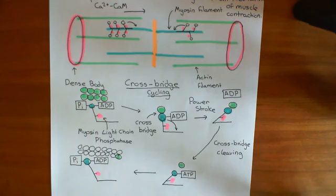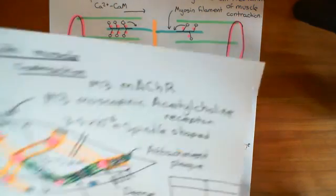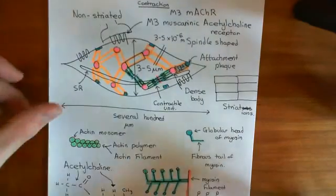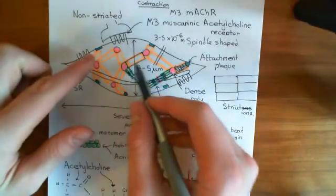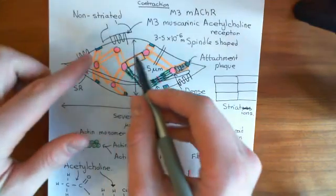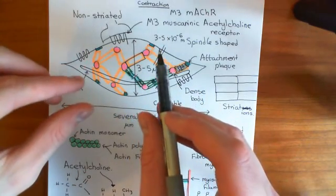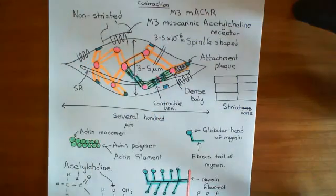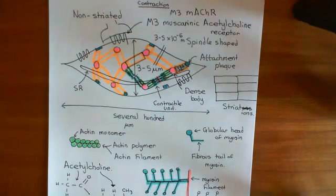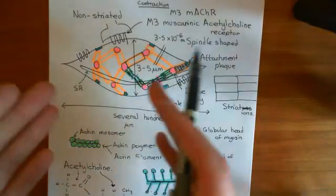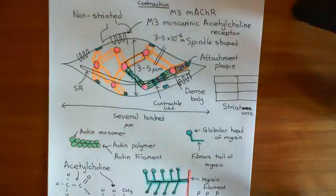Finally, if you have a local acetylcholine stimulus, you get contraction of the contractile units only in that local region where calcium has gone up and is activating the myosin light chain kinase. Whereas if you have a global acetylcholine signal, calcium goes up globally and you get contraction globally.